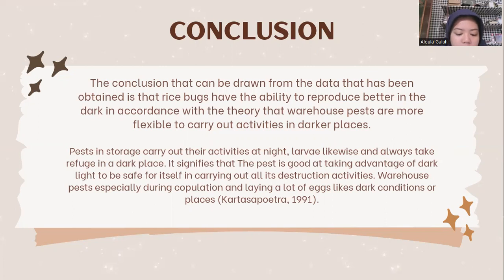There are several reasons why rice placed in a plastic container without light experiences moisture. First, food storage properties: plastic containers can retain moisture inside, especially if the rice or grains have a high moisture content. Second, restricted air circulation: tight plastic containers can restrict air circulation around the grain, causing an increase in humidity because moisture released by the rice cannot easily evaporate. Third, condensation: when the temperature around the container changes, especially between day and night, moisture in the air might condense inside the plastic container, providing an additional source of moisture.